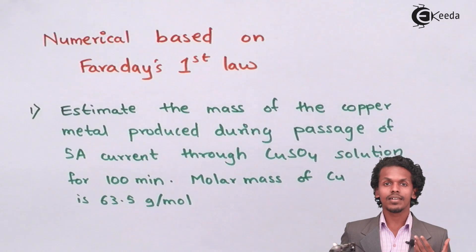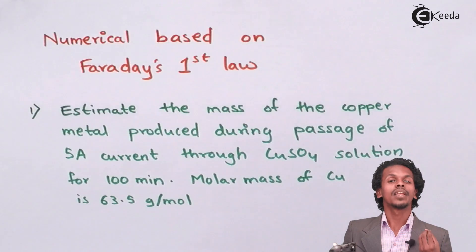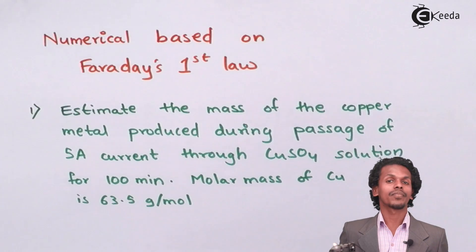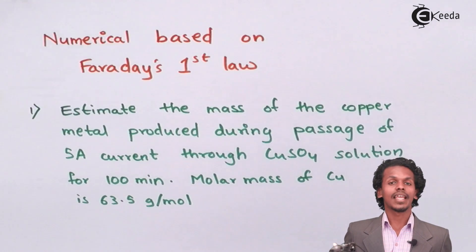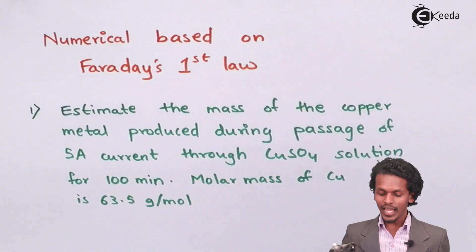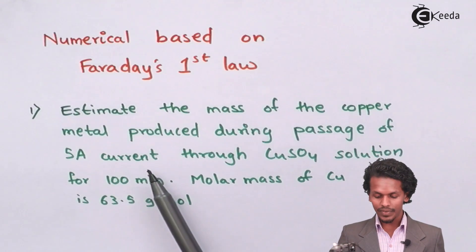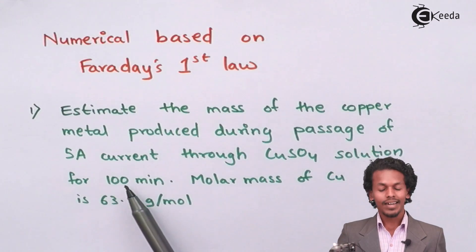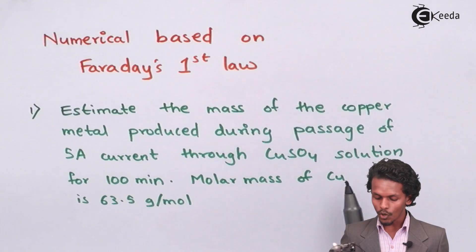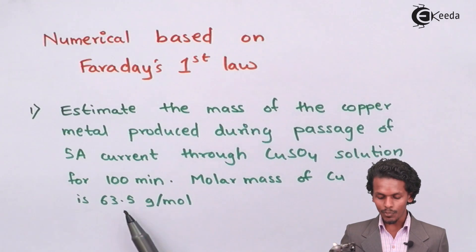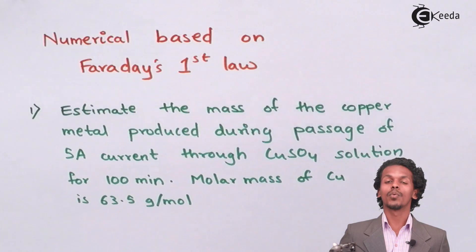The above mentioned question relates to Faraday's first law and Faraday's second law. We have to calculate the mass of copper metal produced during passage of 5 ampere of current through copper sulfate solution for 100 minutes. The molar mass of copper was found to be 63.5 gram per mole.